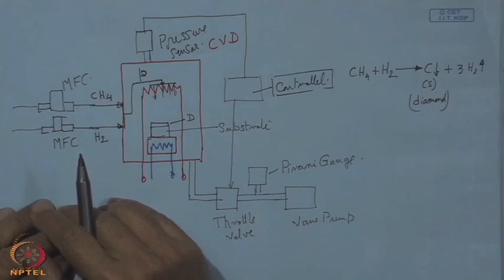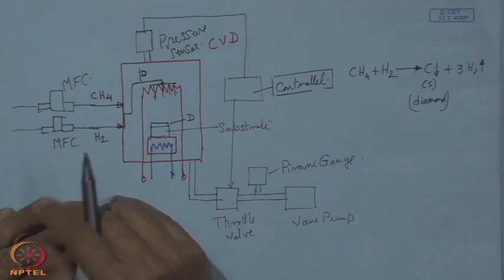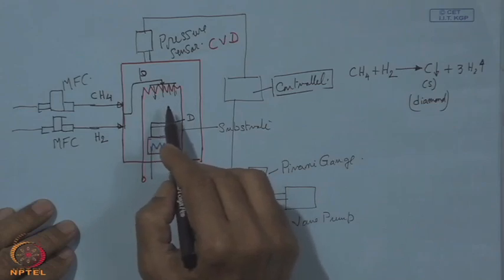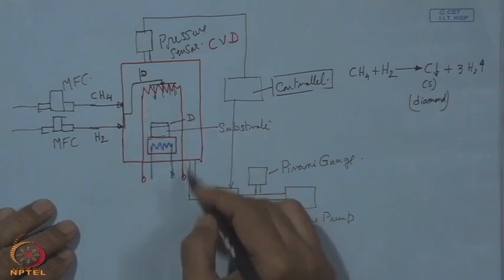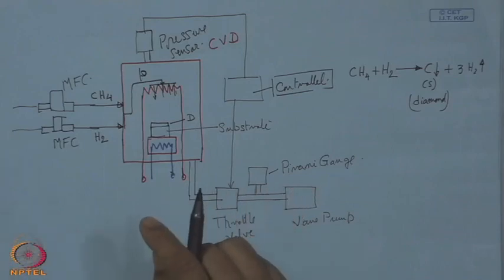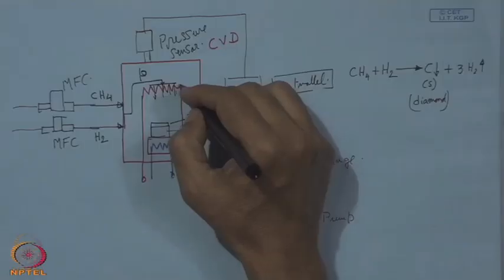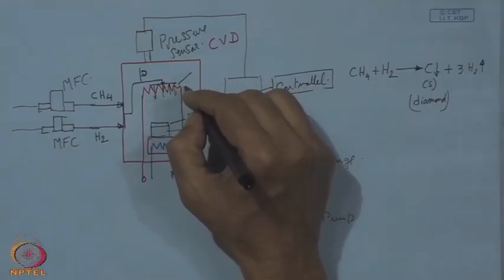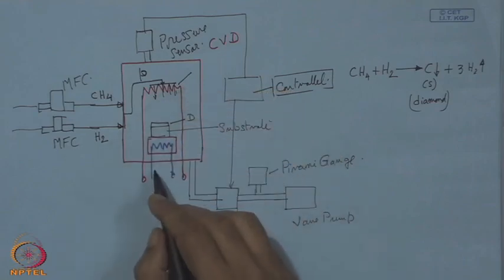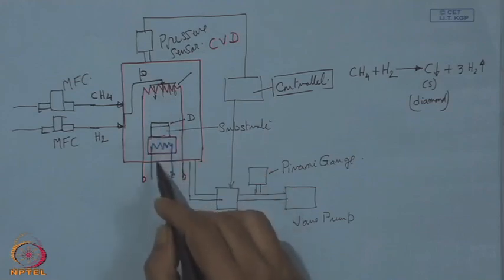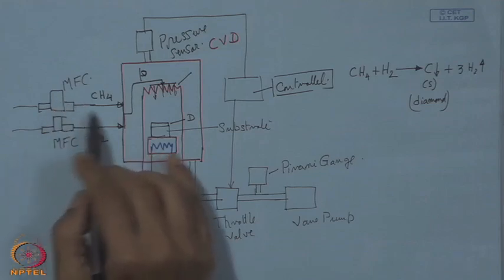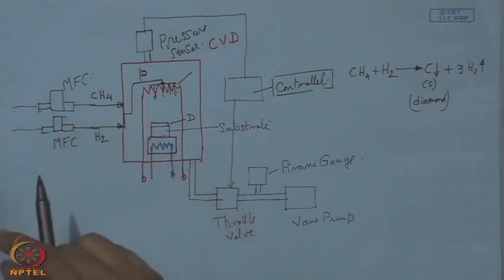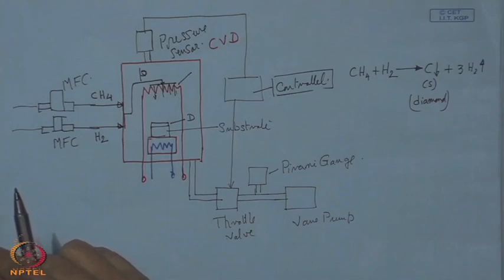The filament — made of tantalum or tungsten — can be given a particular geometry according to need, whether for a turning tool, milling cutter, or drill. These are the advantages of hot filament CVD. The filament temperature and substrate temperature both need to be monitored. Pressure is also one parameter, along with the amount of incoming gas flow of CH4 and H2. This is a cold wall CVD reactor because the wall is not heated.